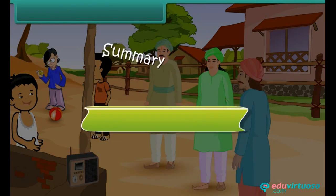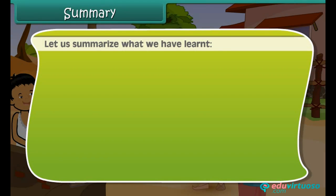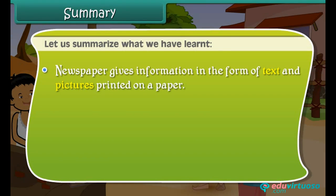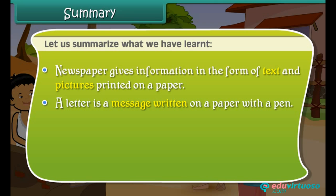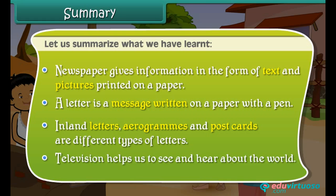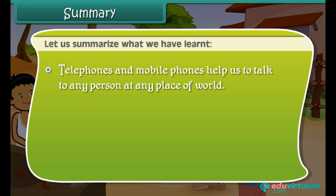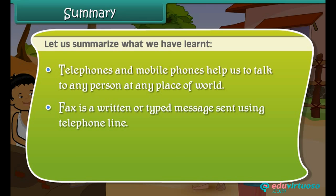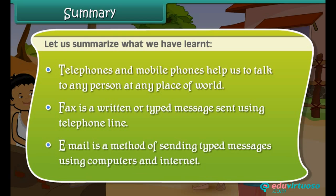Let us summarize what we have learned. Newspaper gives information in the form of text and pictures printed on a paper. A letter is a message written on a paper with a pen — inland letters, aerograms, and postcards are different types. Television helps us see and hear about world happenings. Telephones and mobile phones help us talk to any person at any place in the world. Fax is a written or typed message sent using a telephone line. Email is a method of sending typed messages using computers and the internet.